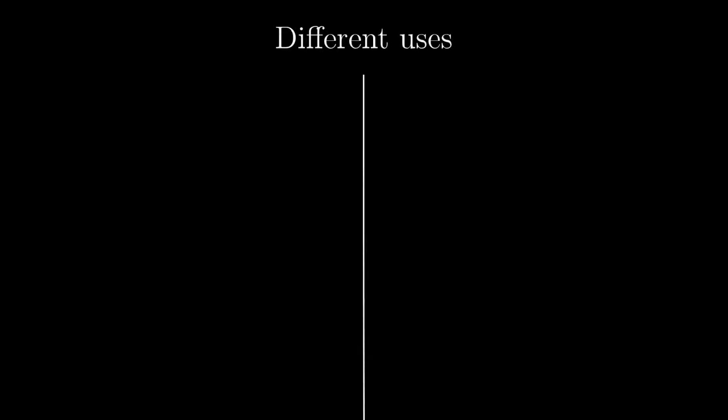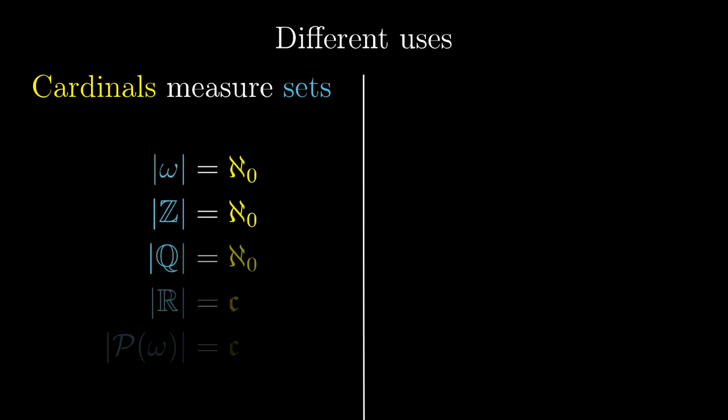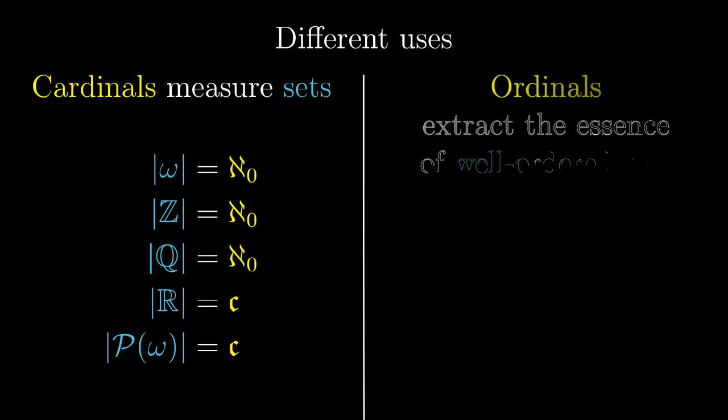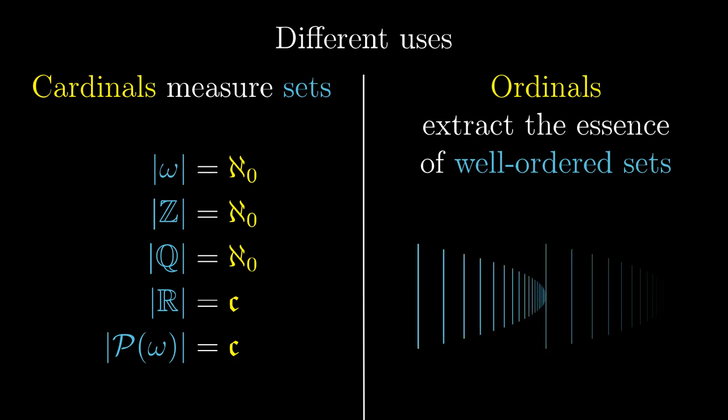And then there are different motivations behind the abstraction of set sizes or order types. We introduced cardinal numbers for the investigation of sizes of different sets such as natural numbers, integers, rational numbers, real numbers and so on. But ordinals are not primarily intended for examining different well-ordered sets. They rather extract the essence of well-ordered sets. They are useful for focusing on what is essential on the well-ordering property, the ordering itself, not the underlying set.